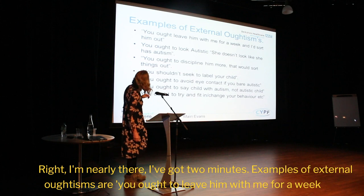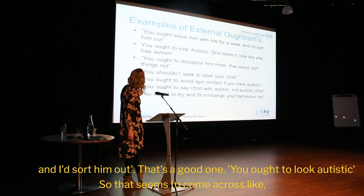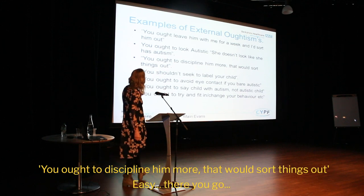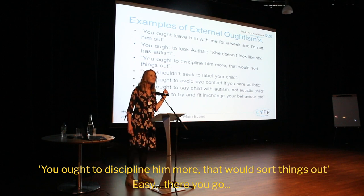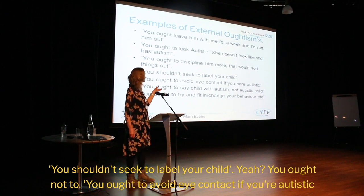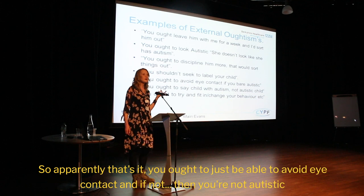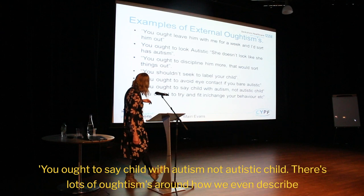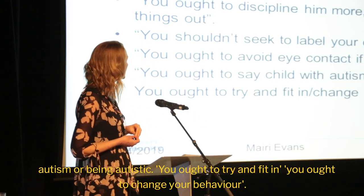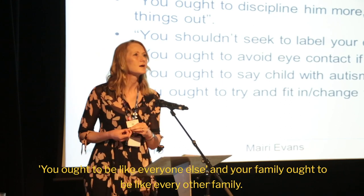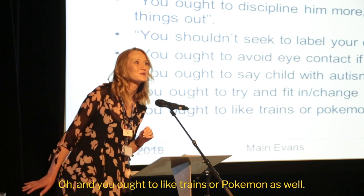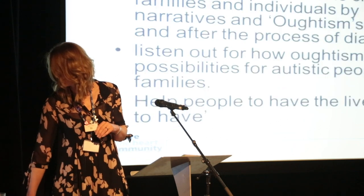Examples of external Oughtisms: 'You ought to leave him with me for a week and I'd sort him out.' 'You ought to look Autistic' — apparently there's a way you ought to look. 'You ought to discipline him more, that would sort things out.' 'You shouldn't seek to label your child.' 'You ought to avoid eye contact if you are Autistic — and if not, then you're not Autistic.' 'You ought to say child with Autism, not Autistic child' — there are lots of Oughtisms around how we even describe Autism. 'You ought to try and fit in, change your behaviour, be like everyone else, and your family ought to be like every other family.' And you ought to like trains or Pokémon as well.